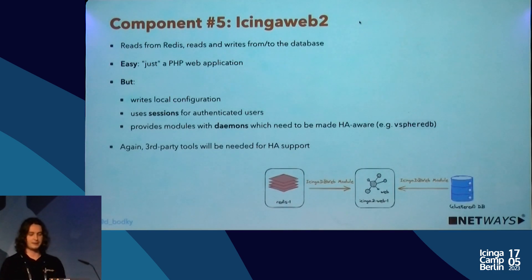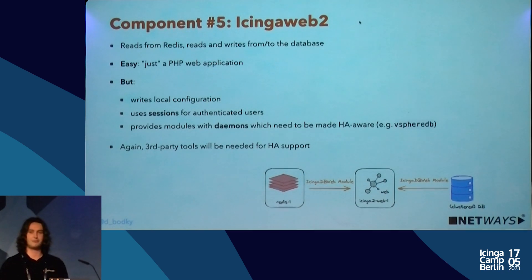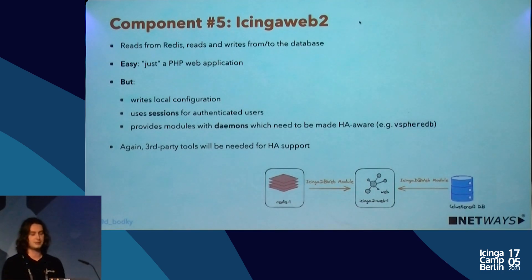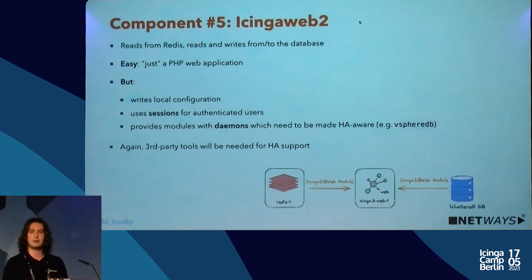The fifth component is Icinga Web, which is a PHP web application that reads state from Redis and reads and writes from the database. This one should be easy to make highly available — just spin up another node, throw another Apache at it, configure Icinga Web and you're good to go. Well, yes and no: Icinga Web writes local configuration to disk, user-created dashboards are written locally, sessions for authenticated users are held locally, and several Icinga Web modules come with their own daemons. Those daemons need to be HA-aware too, otherwise you might end up with duplicated state — for example in vSphere DB with two daemons scraping vCenters and writing to the database.